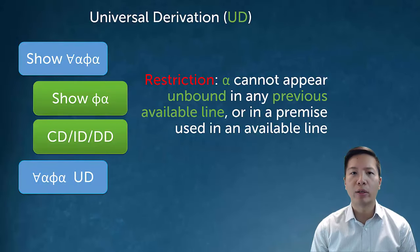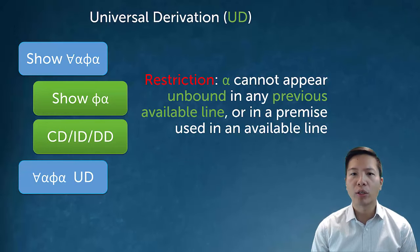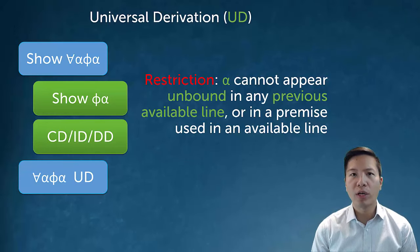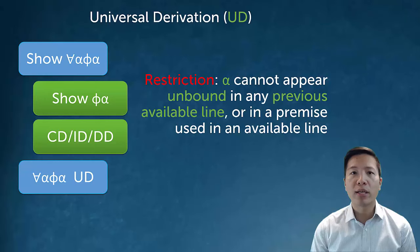Here's the universal derivation rule that we learned. Now what's odd about the universal derivation rule is it's got these complicated restrictions. So let's focus on the first restriction. Alpha cannot appear unbound in any previous available line. So what this is saying is for us to do universal derivation, the letter that we do the UD to has to be perfectly arbitrary. And that makes sense. We understood that that is actually the key feature of universal derivation. It's the arbitrariness of alpha.